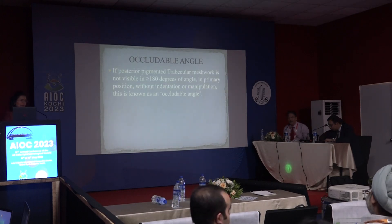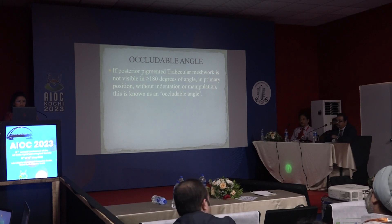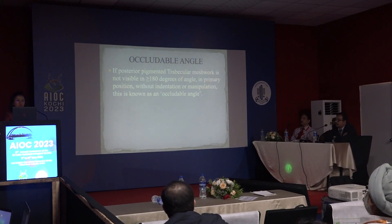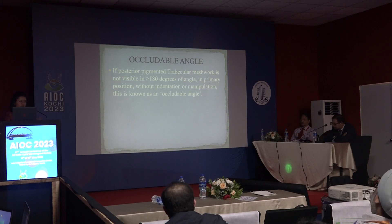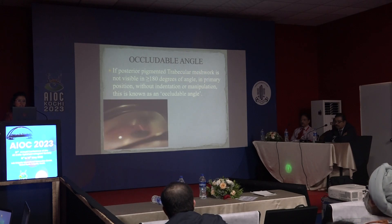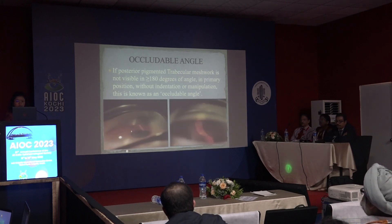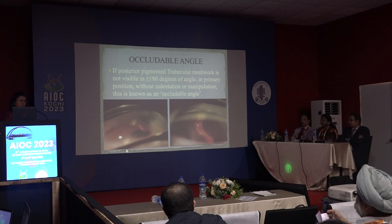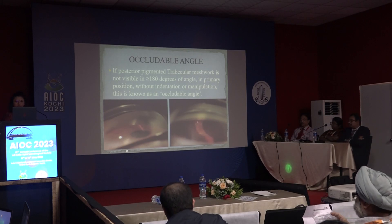An occludable angle is defined as one in which the posterior pigmented trabecular meshwork is not visible in more than 180 degrees of angle in the primary position without any indentation or manipulation. This is contrasted with a totally open angle where all structures of the angle are visible.